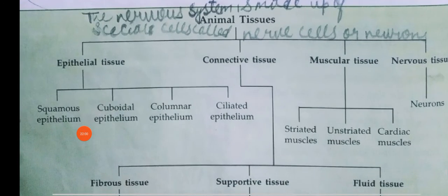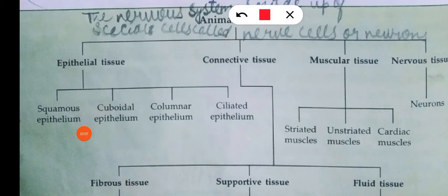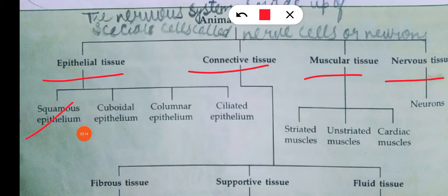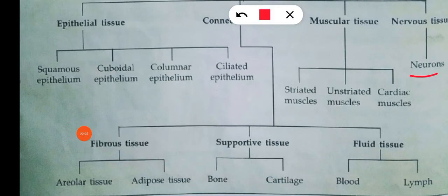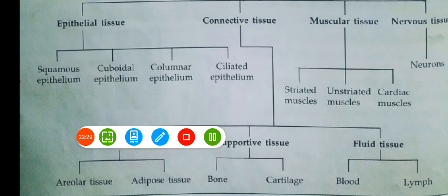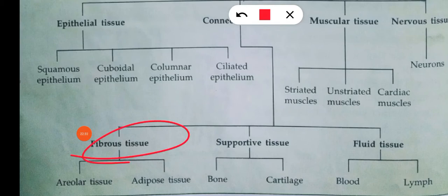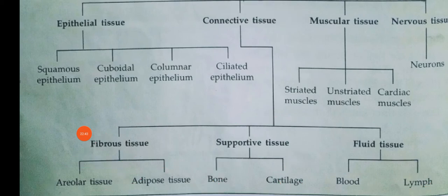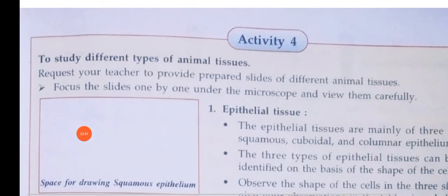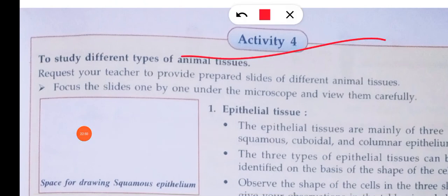To summarize animal tissues: there are 4 types — epithelial (squamous, cuboidal, columnar), connective (fibrous, supportive, fluid — blood and lymph, supportive includes bone and cartilage), muscular (striated, unstriated, cardiac), and nervous (neurons). I am ending this video here. If you have any doubt or problem, write in the comment section. Activity 4 is very easy — you will need your mom's help for it.